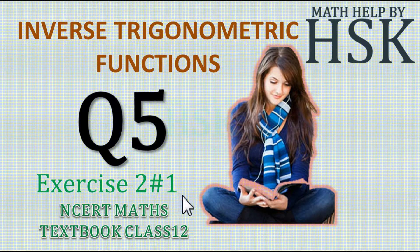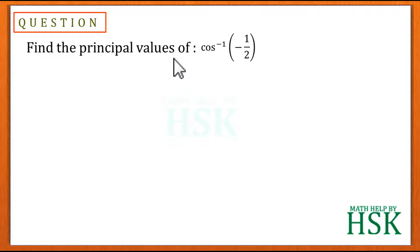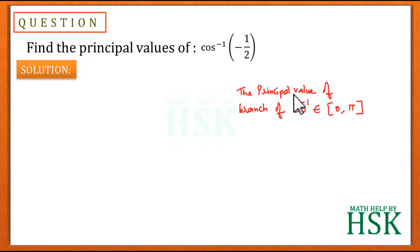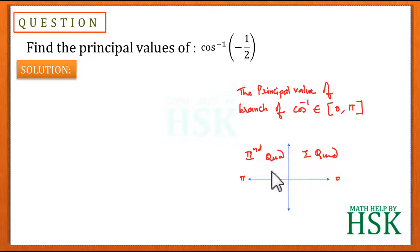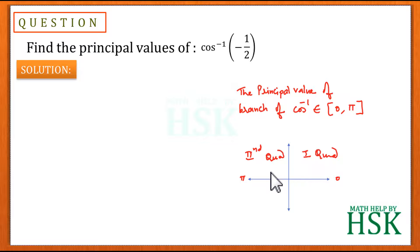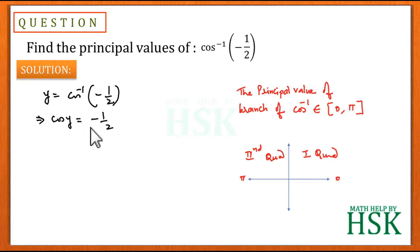Taking question number five of exercise 2.1, we have to find the principal value of cos inverse of minus 1 by 2. To solve this, the principal value of the cos inverse function belongs to the closed interval 0 to pi, meaning we get the principal value in the first or the second quadrant. We assume the principal value y equals cos inverse of minus 1 by 2, so cos y equals minus 1 by 2.